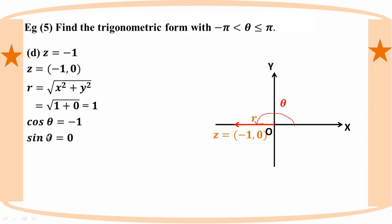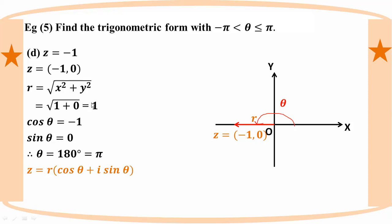Sine theta is zero. We only need cos theta equals minus 1. This gives the trigonometric form of the complex number.